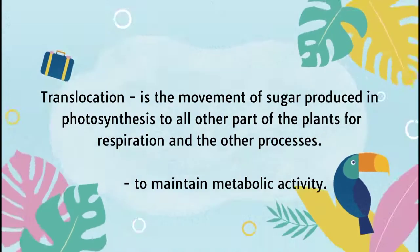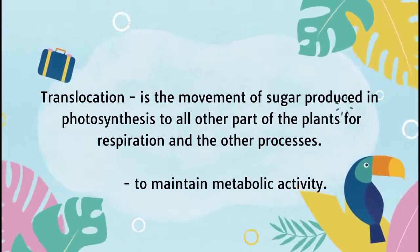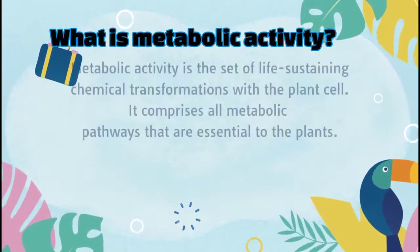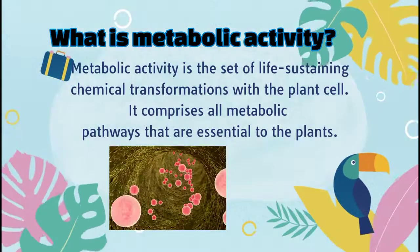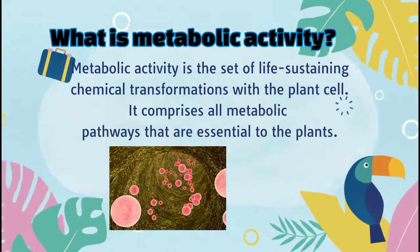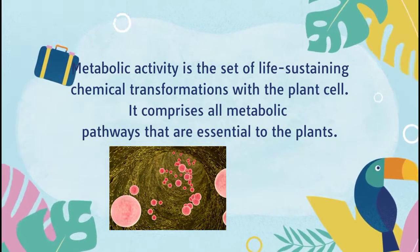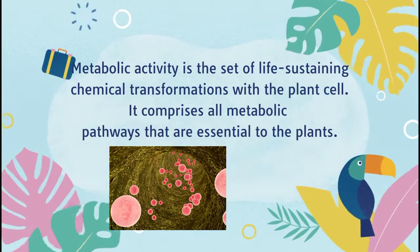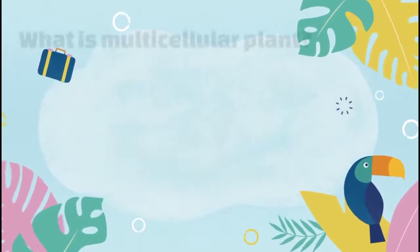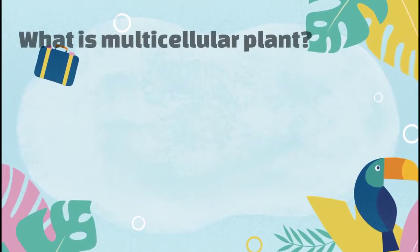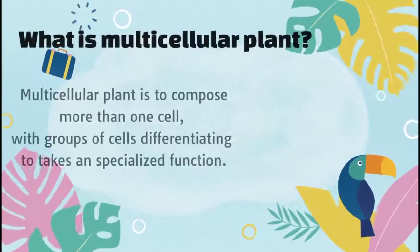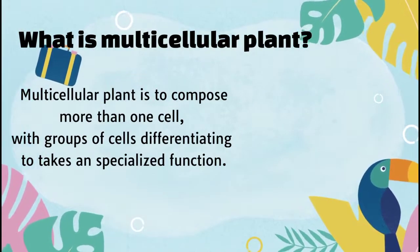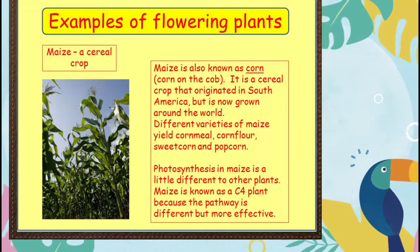Also, translocation is used to maintain metabolic activity. But the question is, what is metabolic activity? Metabolic activity is the set of life-sustaining chemical transformations within the plant cell. It comprises all metabolic pathways that are essential to the plant. As for multicellular plants, they are composed of more than one cell, with groups of cells differentiating to take on specialized functions, for example, maize and beans.